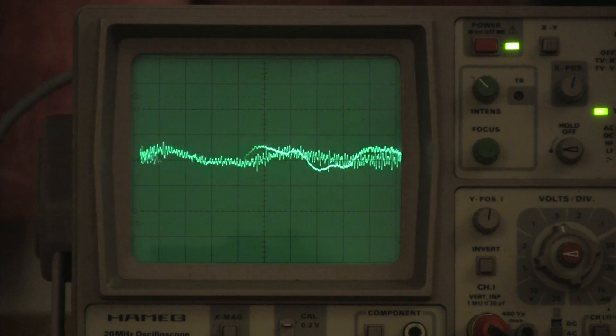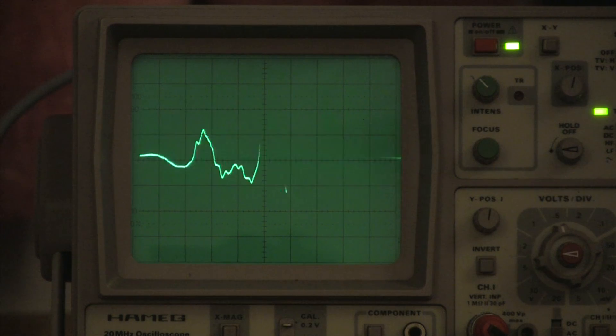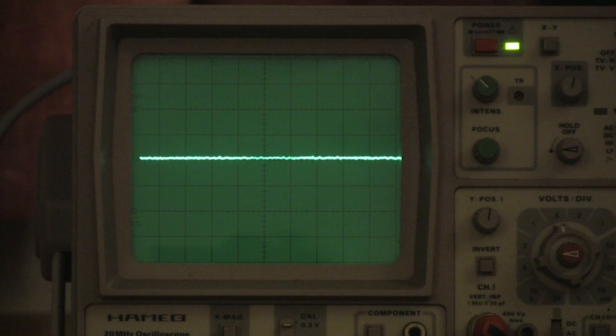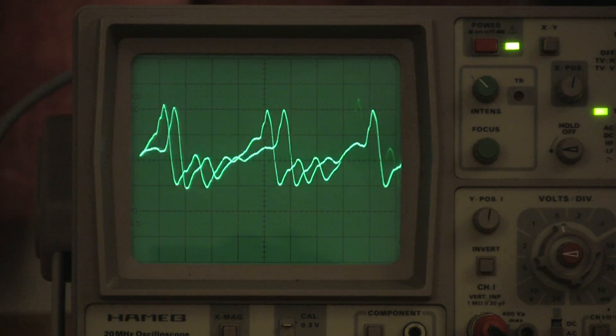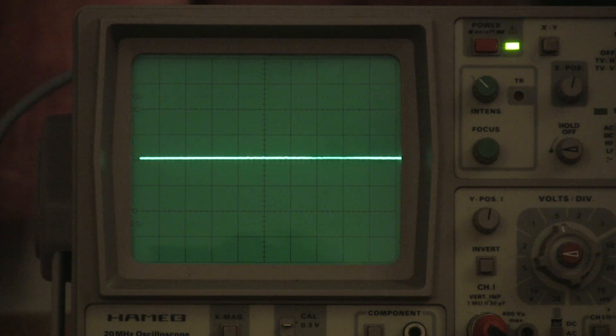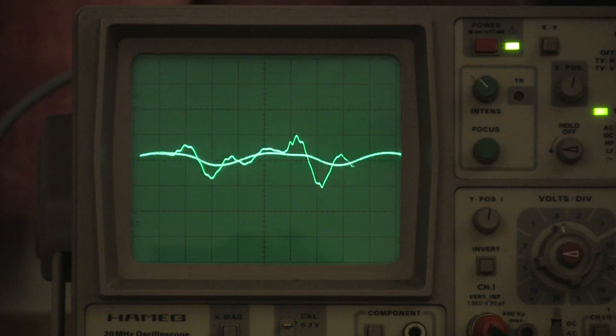You might also notice some ringing in the square wave signal. This is probably being created by filtering in the digital-to-analog converter. The ringing frequency is around 46 kHz, so it is well above the audio band. The oscilloscope, by the way, is specified up to 20 MHz, so we can expect it to be completely clean in the audio band.